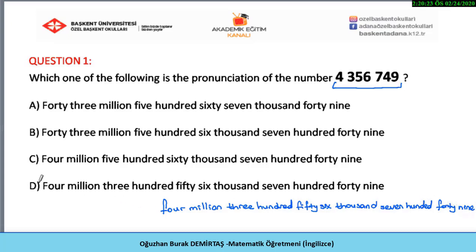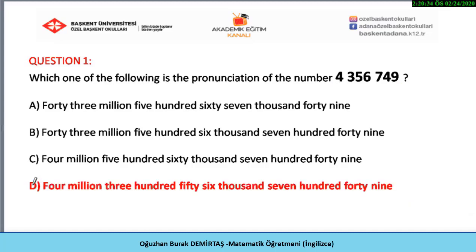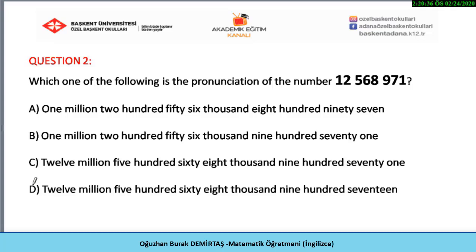So the correct answer is D: four million, three hundred fifty-six thousand, and seven hundred forty-nine. Next question: which one of the following is the pronunciation of the number shown?